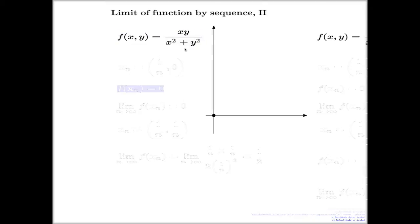However, what we meant to show here is that this function doesn't have a limit when x approaches 0. We can do it via the theorem we just discovered. The theorem says a function has a limit b, or any other value, when the same limit comes up across any sequence which approaches the point a. In this case, the point is 0.